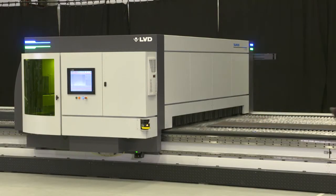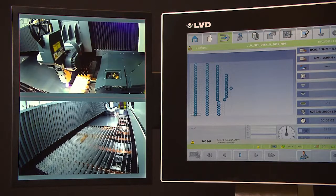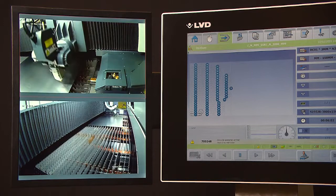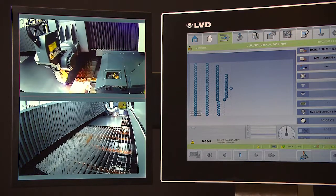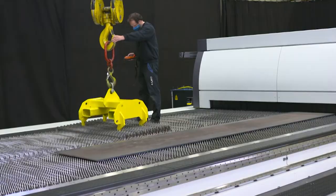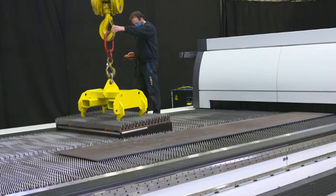During cutting we can follow the process on an extra screen right next to the user interface. Two cameras nicely capture what is going on inside the moving covers. Special scrap bins can be lifted out to empty without removing the table slats on top.